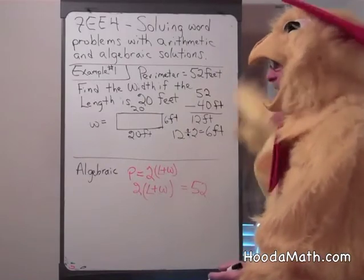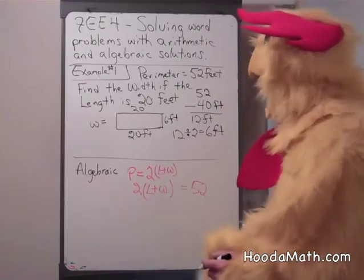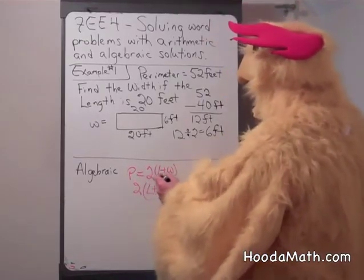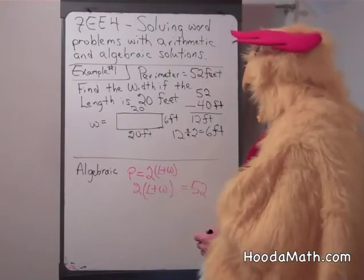Now, using symbols and algebra, we're going to solve this problem also. We know that the perimeter of any rectangle is 2 times the quantity of the length plus the width.